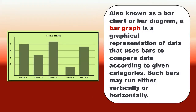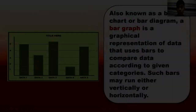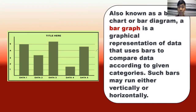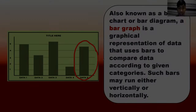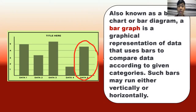Also known as a bar chart or bar diagram, a bar graph is a graphical representation of data that uses bars to compare data according to given categories. Such bars may run either vertically or horizontally. In this example, it is vertical — this is the movement of vertical, while this is the movement for the horizontal.